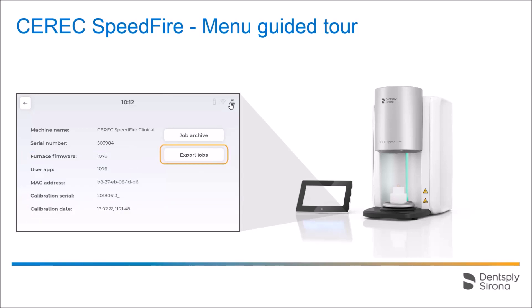By tapping the export jobs icon, jobs can be transferred to a storage medium. The job archive includes new orders and those with errors as well as completed ones. Here you have the option of permanently deleting orders or, if possible, transferring them back to the list of orders. Next, we will take a look at some options.